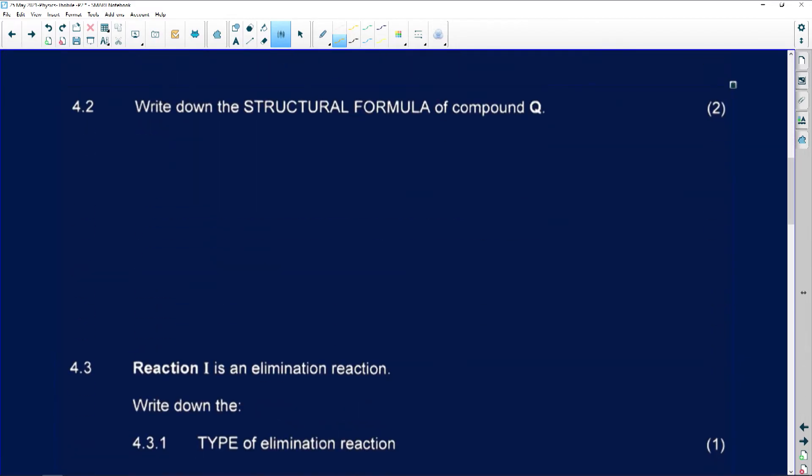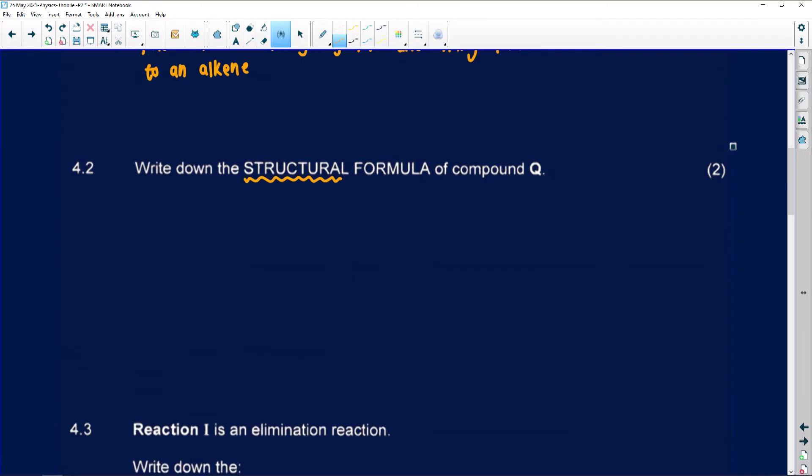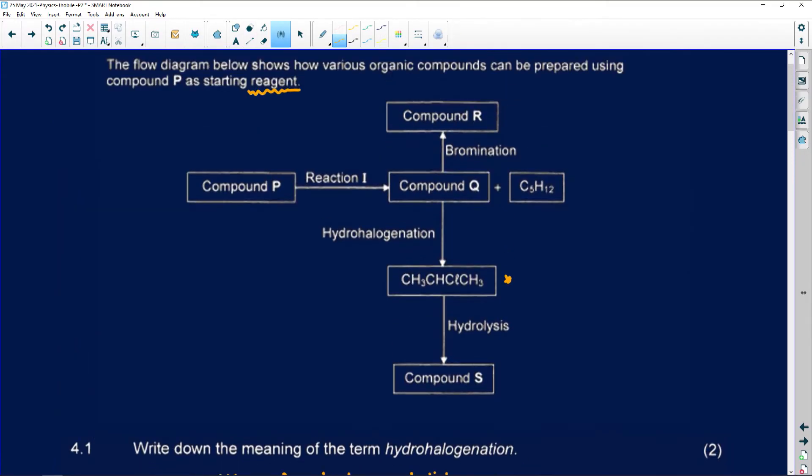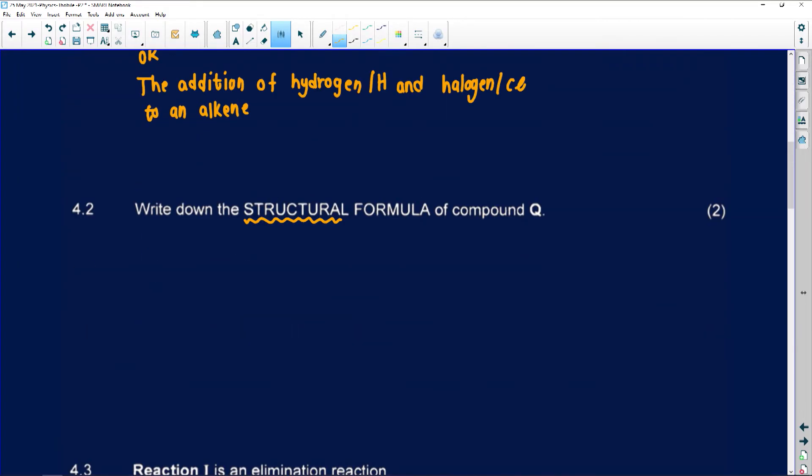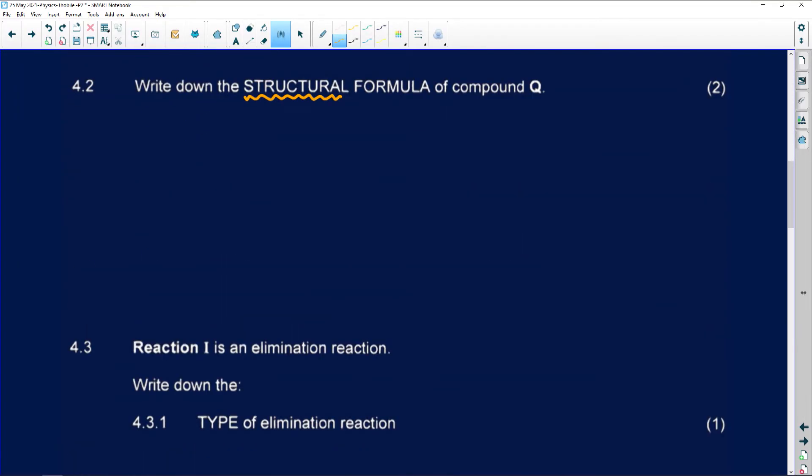Number 4.2 says write down the structural formula for compound Q. If we had to go up, let's see where is compound Q. I can see this is reaction P, this is then reaction 1, Q, bromination is going all the way up. So I know that it was removed, meaning that compound Q must then have a double bond in it.